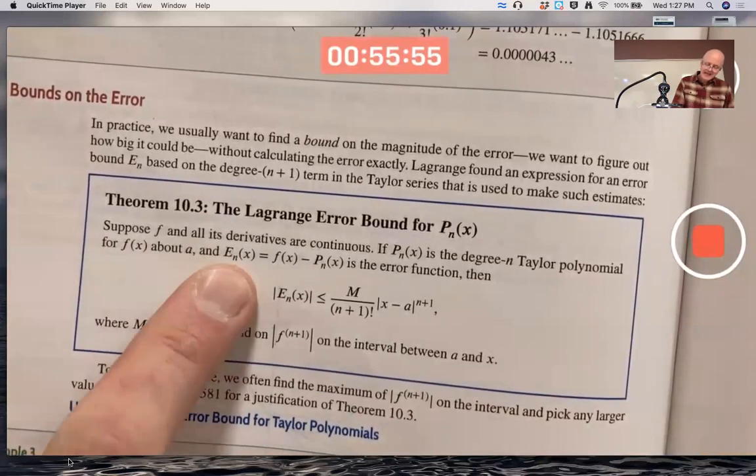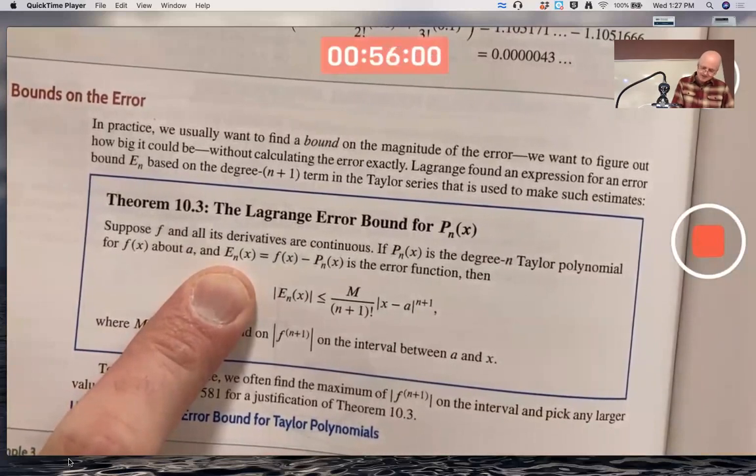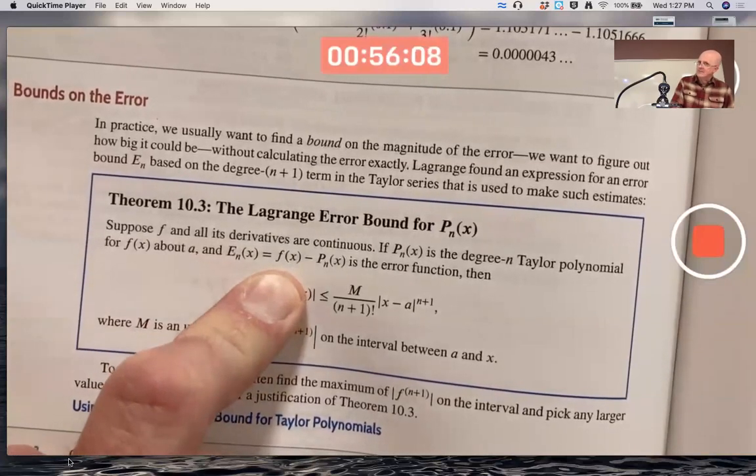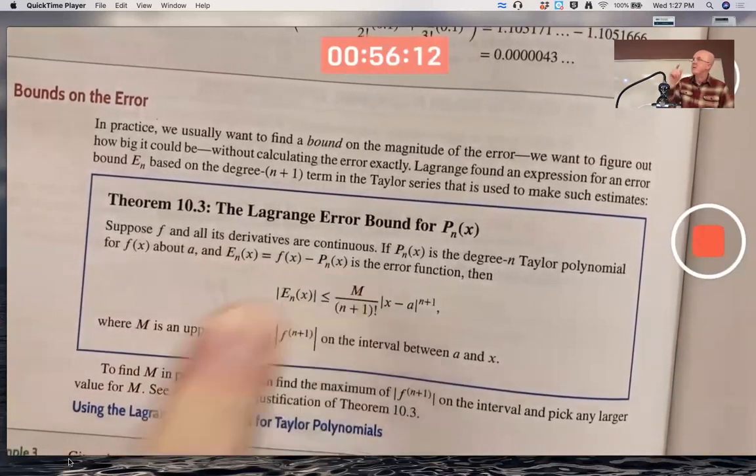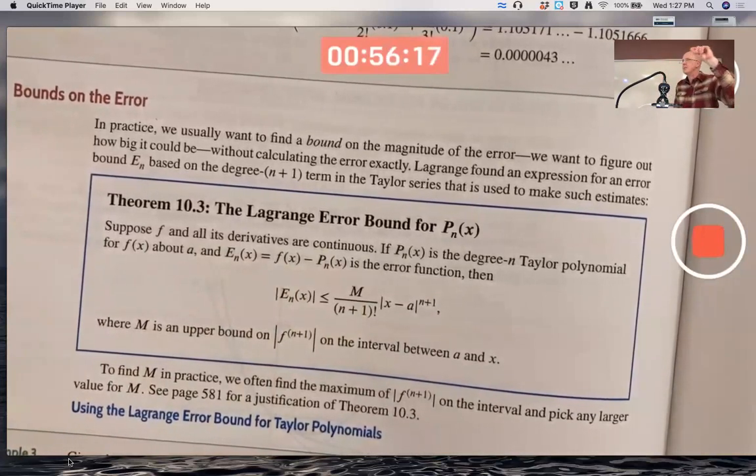Let e_n of x be f of x minus p_n of x be the error function. There's your actual function value f of x. There's your approximation. Remember with numerical integration, that error was actual minus approximate, with left-hand rule, right-hand rule, trapezoidal rule, midpoint rule, and Simpson's rule.